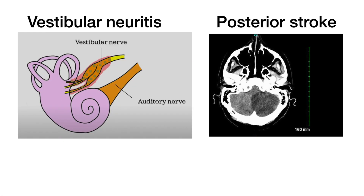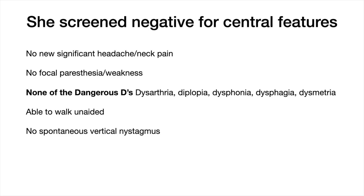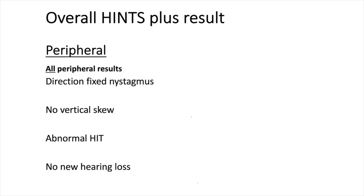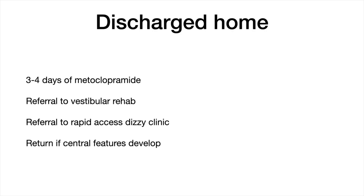In summary, to diagnose this patient with acute vestibular syndrome as vestibular neuritis, I first needed to screen her for central features. As she screened negative, I used the HINTS-Plus exam to demonstrate nystagmus that doesn't change direction with gaze, no vertical diagonal skew, an abnormal head impulse test when her head was turned away from the fast direction of nystagmus, and a normal bedside test of hearing. As all four components were peripheral, the overall HINTS-Plus exam was peripheral — likely vestibular neuritis. I discharged her home with a limited supply of an antiemetic and a referral to vestibular rehab.